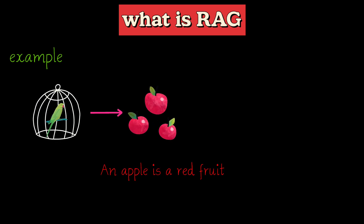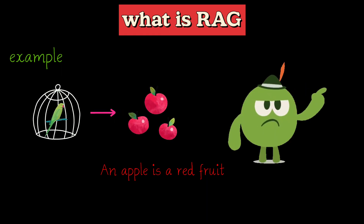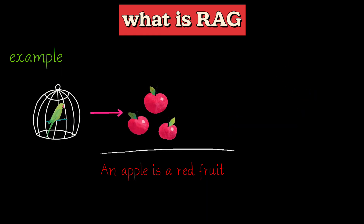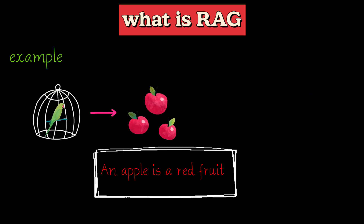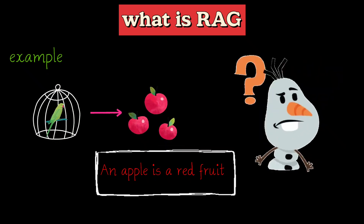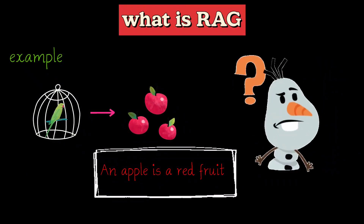You could just say 'an apple is a red fruit,' but that wouldn't be very helpful. Polly might mimic the phrase but wouldn't truly understand what an apple is. That's where RAG comes in — you grab a book with pictures and show Polly images of apples.